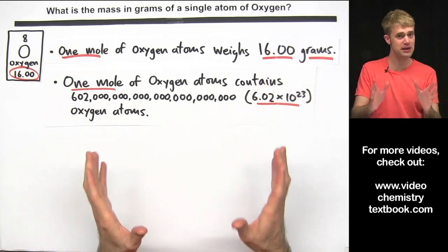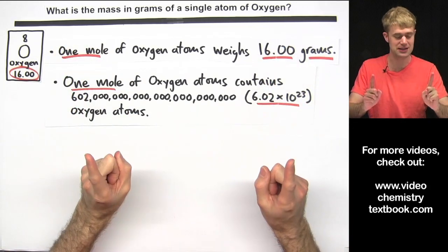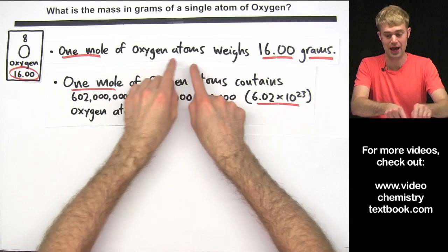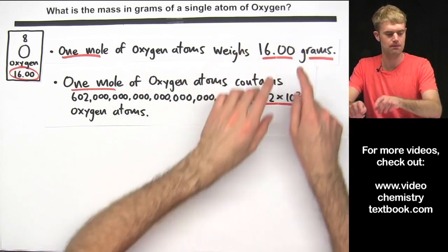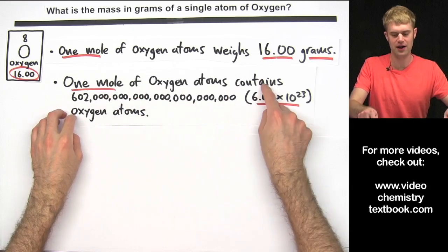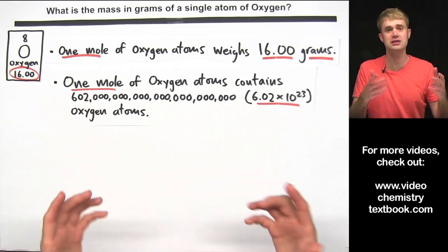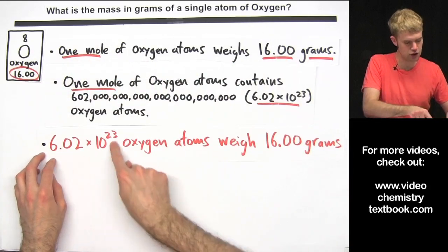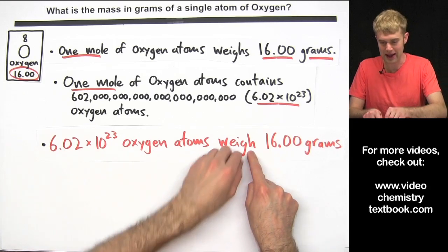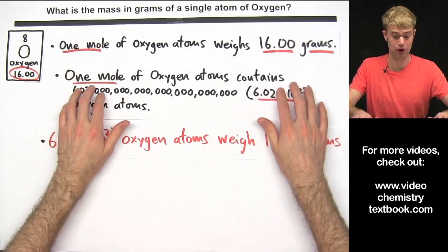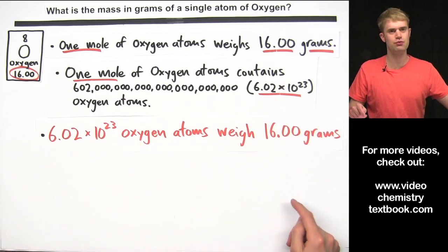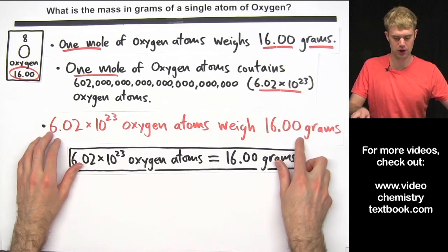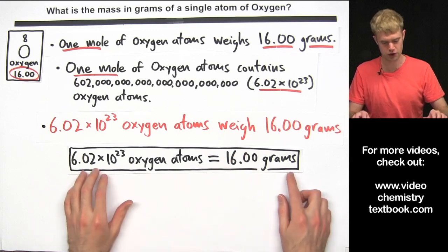We want to combine these two pieces of information to make a third piece of information. We know two things: on the one hand, one mole of oxygen atoms weighs 16.00 grams, and we also know that one mole of oxygen atoms contains 602 hexillion oxygen atoms. So we can combine these to say that 602 hexillion oxygen atoms weigh 16.00 grams. We can express this as an equation: 6.02 times 10 to the 23rd oxygen atoms equals 16 grams.